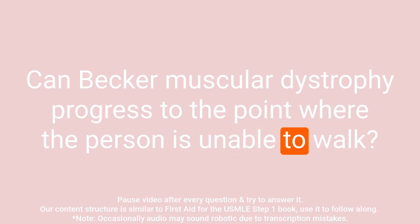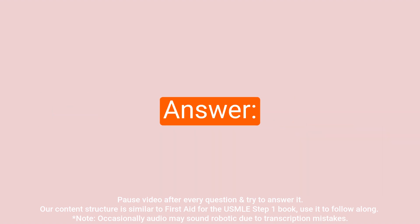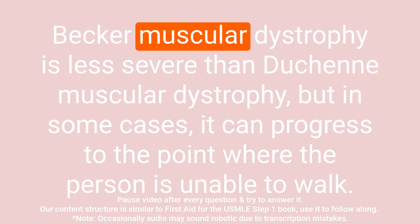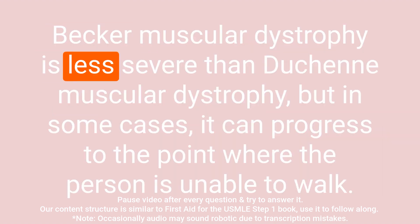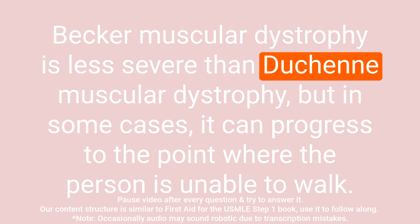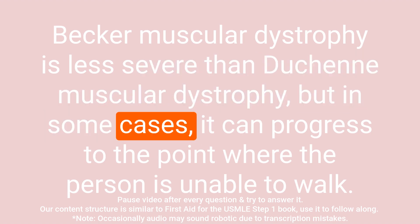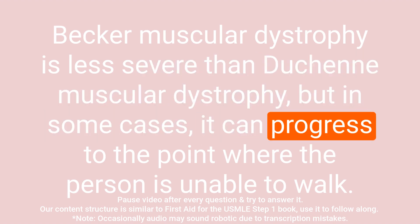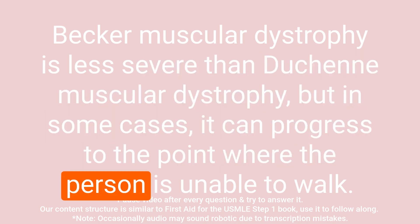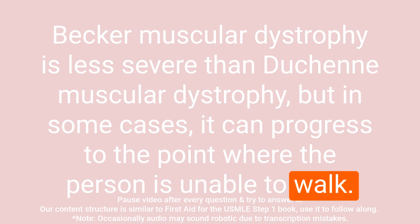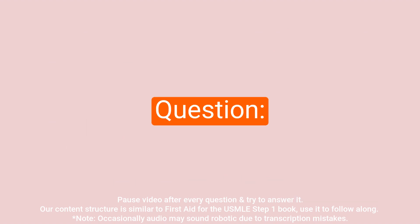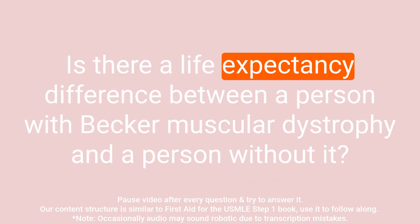Question: Can Becker muscular dystrophy progress to the point where the person is unable to walk? Answer: Becker muscular dystrophy is less severe than Duchenne muscular dystrophy, but in some cases it can progress to the point where the person is unable to walk.